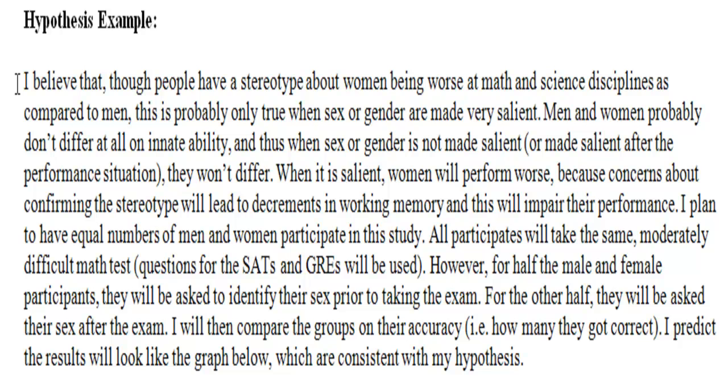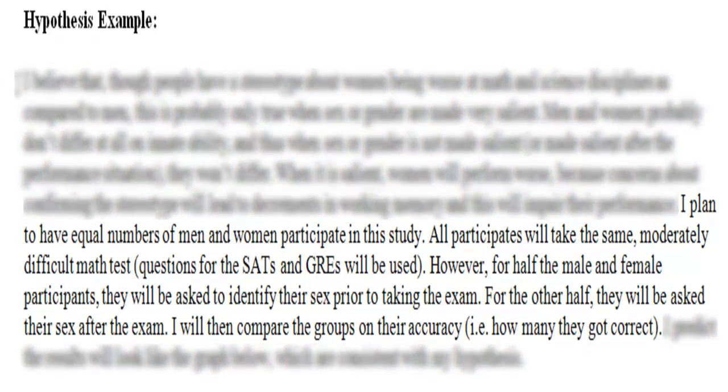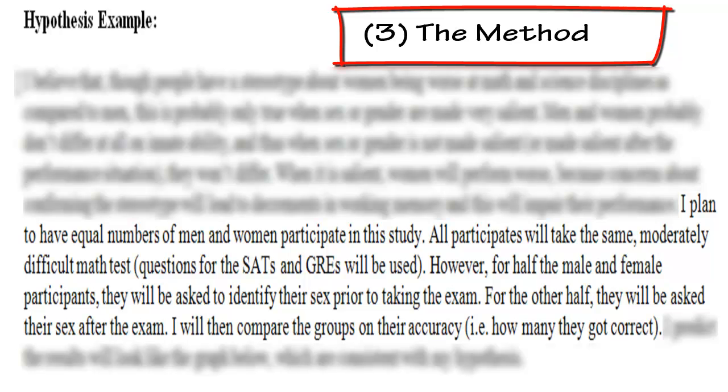I plan to have equal numbers of men and women participate in the study. All participants will take the same moderately difficult math test with questions from the SATs and GREs. However, for half of the male and female participants, they will be asked to identify their sex prior to taking the exam. For the other half, they'll be asked their sex after the exam. I will then compare the groups on their accuracy, how many are correct. So this seems to be the method section. We're going to have equal number of men and women. They're all going to take a moderately challenging math test. Half of them identify their sex beforehand, half after, and then I'm going to look at how they did on the test. This is the method section.